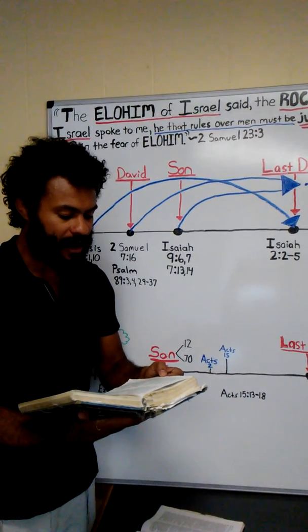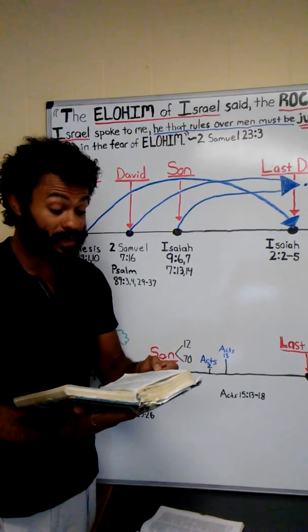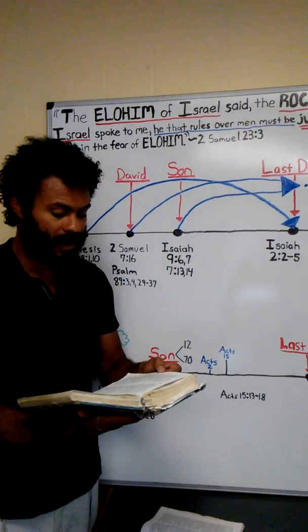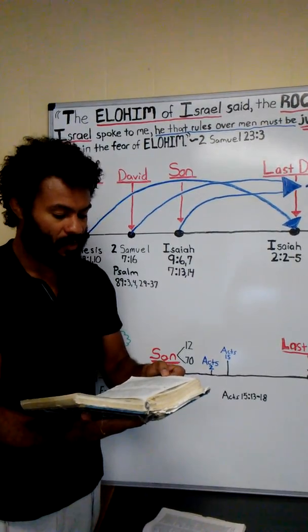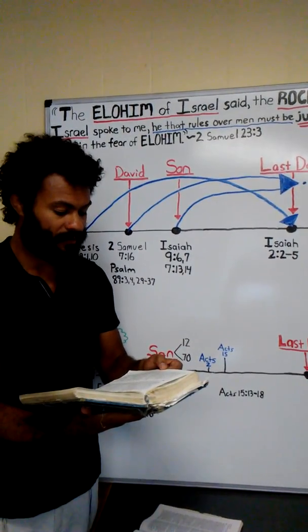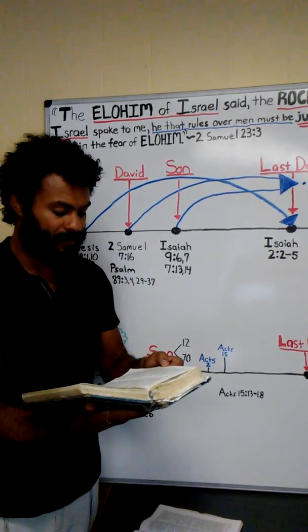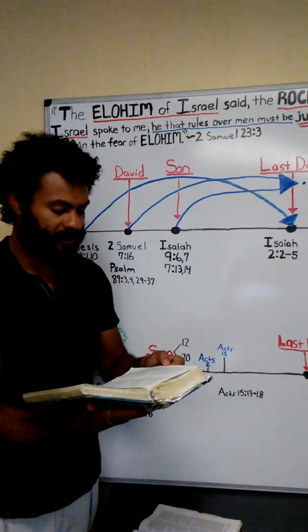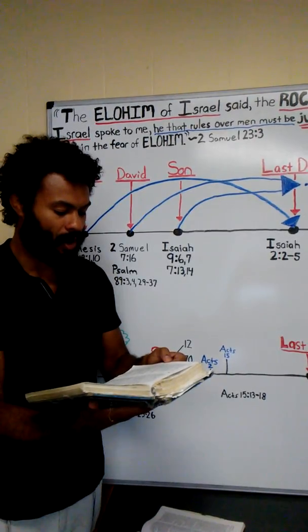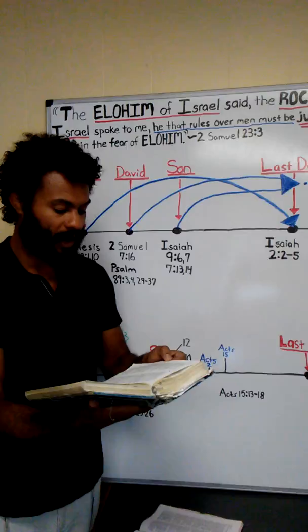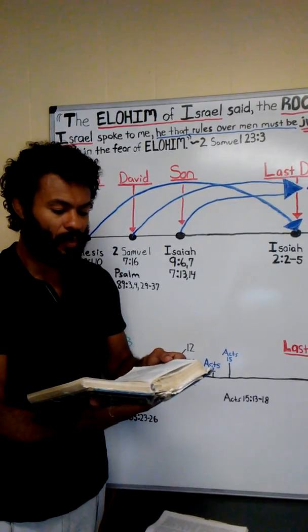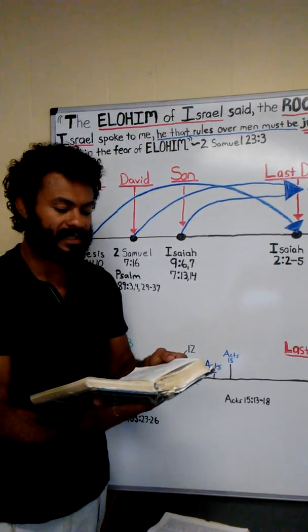Continuing from verse 29 to 37: I shall establish his seed forever, and his throne as the days of the heavens. If your sons forsake my Torah and do not walk in my right rulings, if they profane my laws and do not guard my commands, then I shall visit their crookedness with the rod and their crookedness with flogging. But my kindness I do not take away from him, nor be false to my trustworthiness. I shall not profane my covenant, neither would I change what has gone out from my lips. Once I have sworn by my set of partners, I do not lie to David. His seed shall be forever, and his throne as the sun before me. Like the moon, it is established forever, and the witness in the heaven is steadfast.